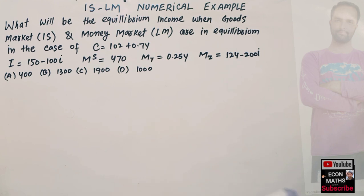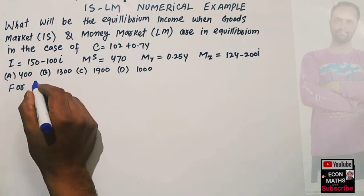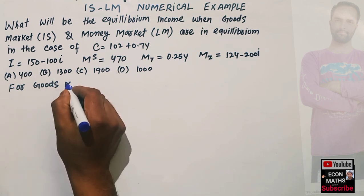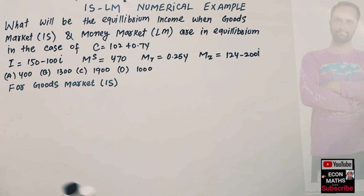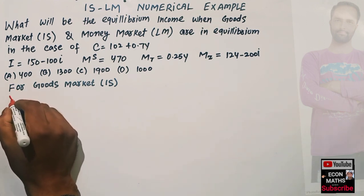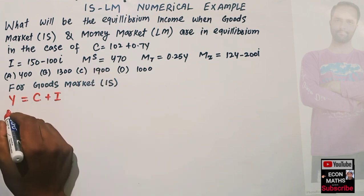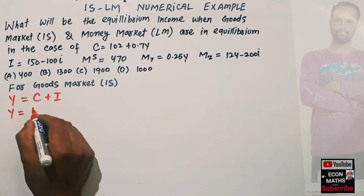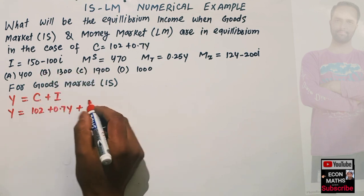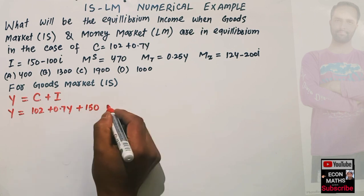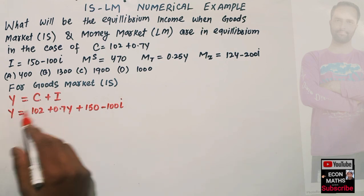First we take the goods market to find the IS function. For the goods market, we know that total income Y equals consumption plus investment. So we write: Y = 102 + 0.7Y + 150 - 100i, using the given consumption function C = 102 + 0.7Y and investment function I = 150 - 100i.